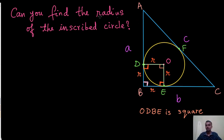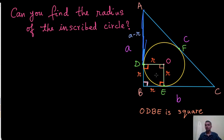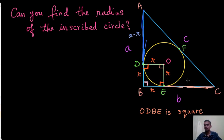We need to find R. As you can see, the entire side AB is A. So the remaining length AD — that is AB minus BD — gives AD equal to A minus R, since BD equals R. In the same way, looking at BC: the entire length BC is B. If we subtract BE, which equals R, the remaining length CE is B minus R.